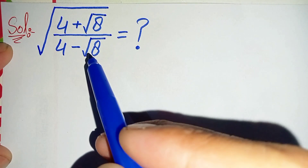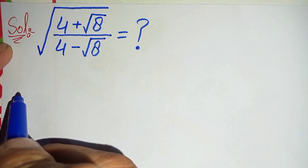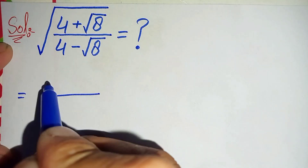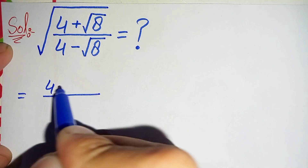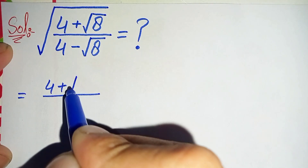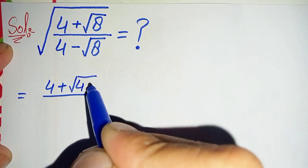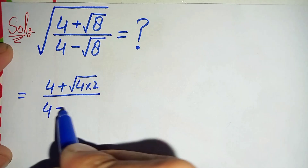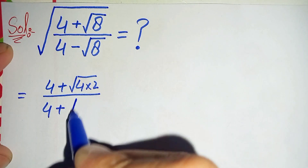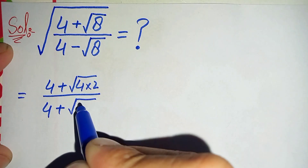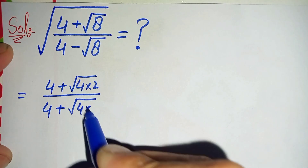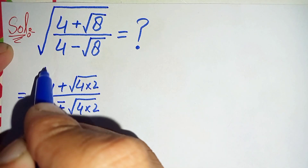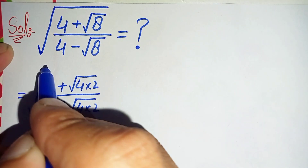First, I will factorize the 8 in the numerator and denominator. We can write 8 as 4 times 2. We will also factorize the 8 in the denominator as 4 times 2 — note that this is negative — all under the whole square root.